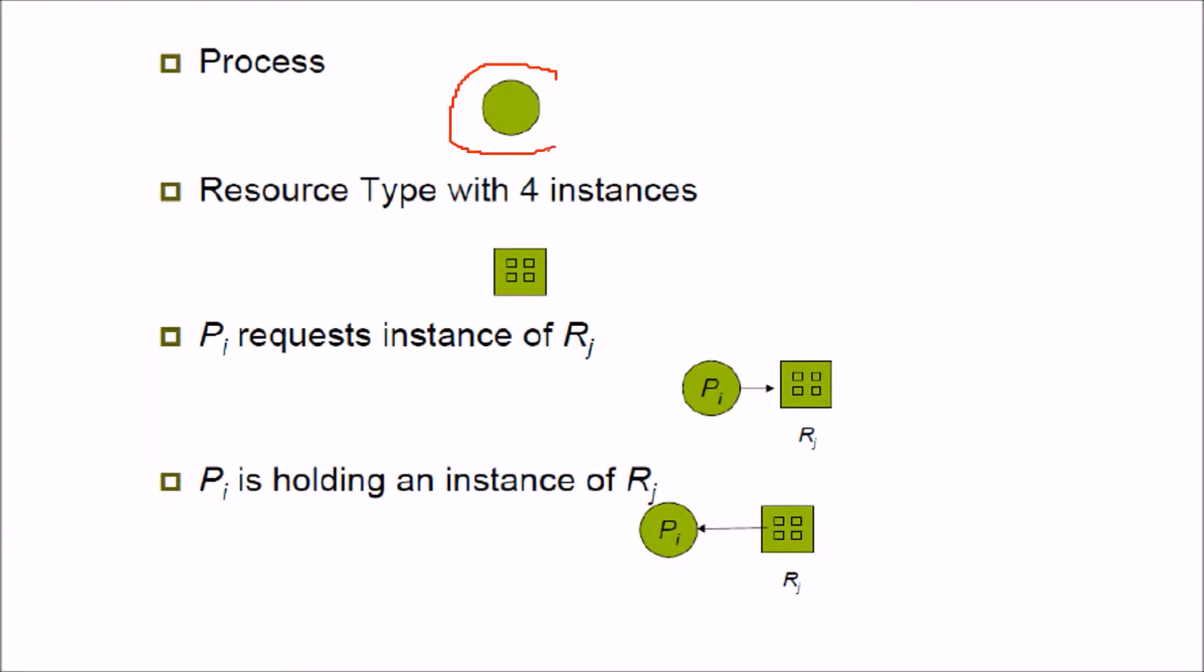Now, process can be represented like this with a bubble or a circle. Resource of multiple instances like this resource, one resource of four instances is there. So four resources of similar type are there. When Pi requests instance of Rj, we represent it like this. And when Pi or process is holding an instance of R, we do it like this.